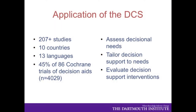We have a research version of this decisional conflict scale. It's 16 items, responding from strongly agree to strongly disagree. There are now over 207 published studies using the scale across 10 countries and 13 languages. In the 86 trials in the Cochrane reviews of decision aids, nearly half have used it, for a total of about 4,000 patients. It started off as an assessment of what people's decisional needs were at the time — it's a process measure.